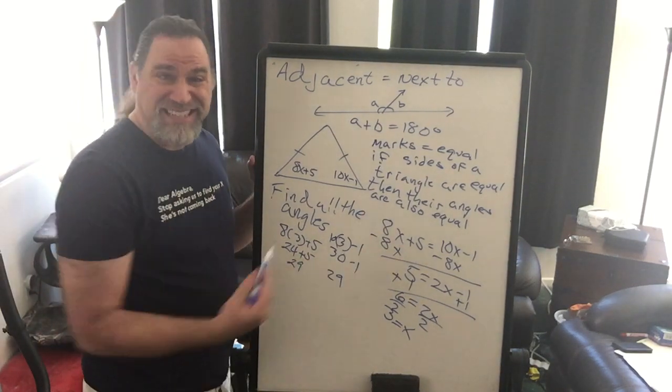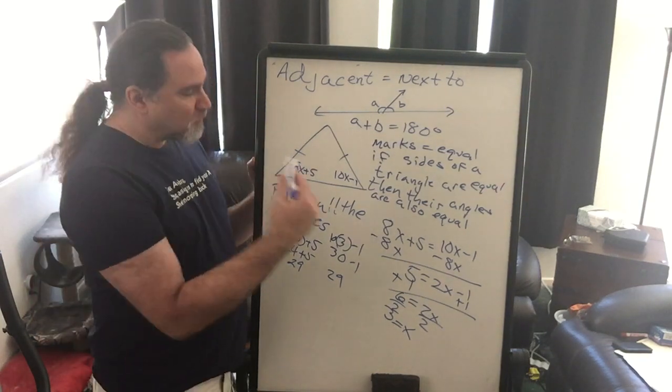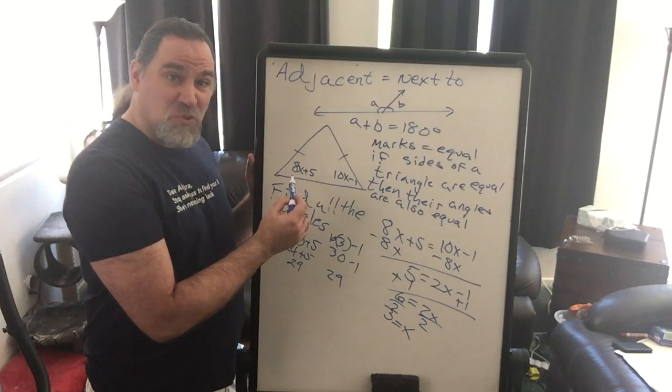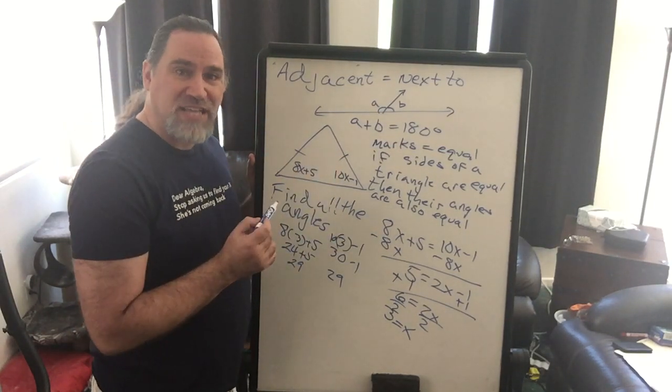So we do know that it worked, that X is the right value. We can check our own answer. We didn't need to ask anybody if we did it right. We know because it worked. Now we have two angles. We now know this is a 29 degree angle, that's a 29 degree angle.